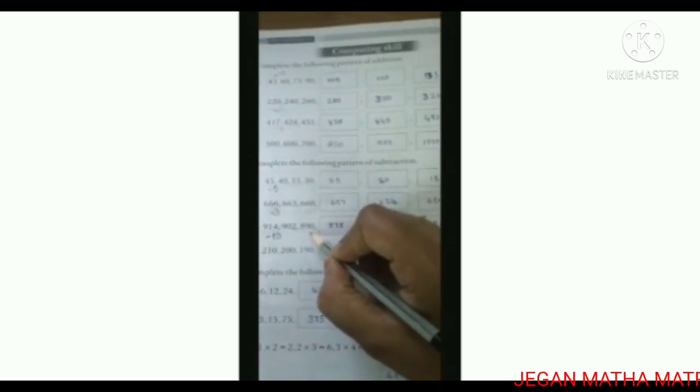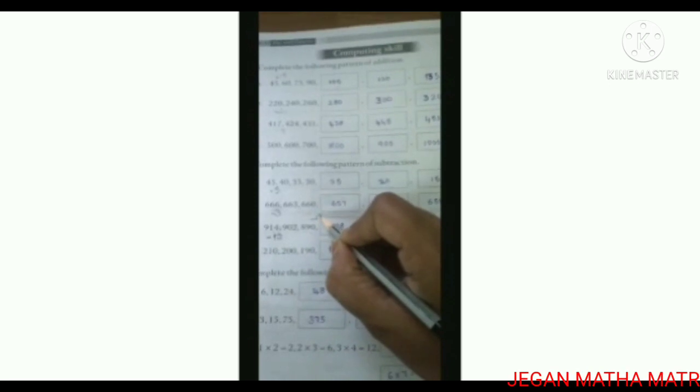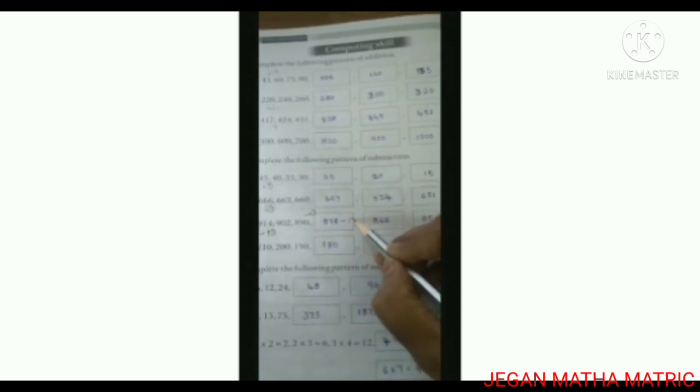890 minus 12 is 878. 878 minus 12 is 866. 866 minus 12 is 854. 854 minus 12 is 842. So the final answer: 878, 866, 854, 842.